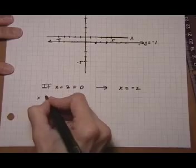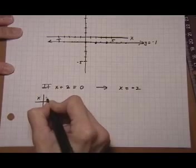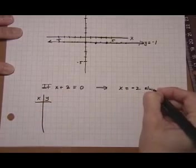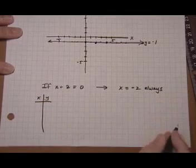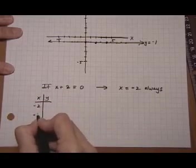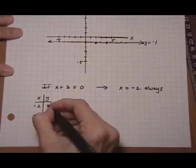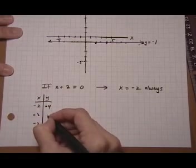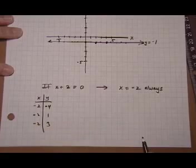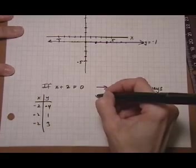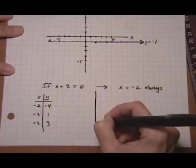Well, this means x is always minus 2. So it doesn't matter what y is. I could pick minus 4, 1, and 3. I could pick anything I want. And I'm still going to get minus 2 for x.